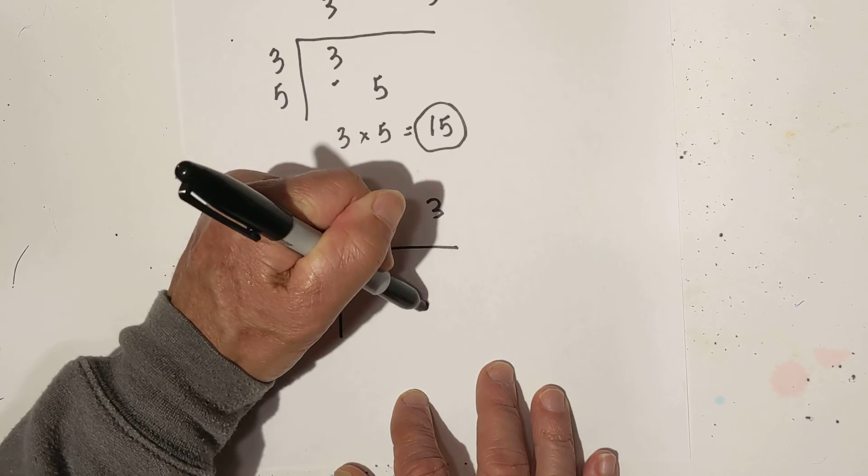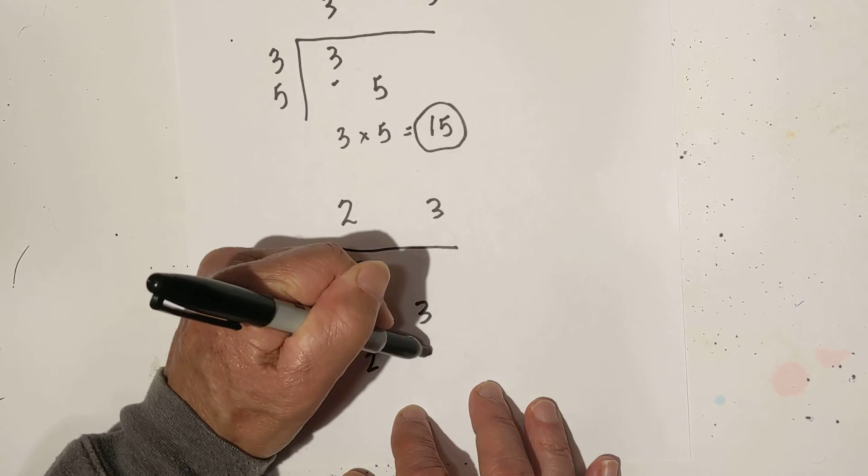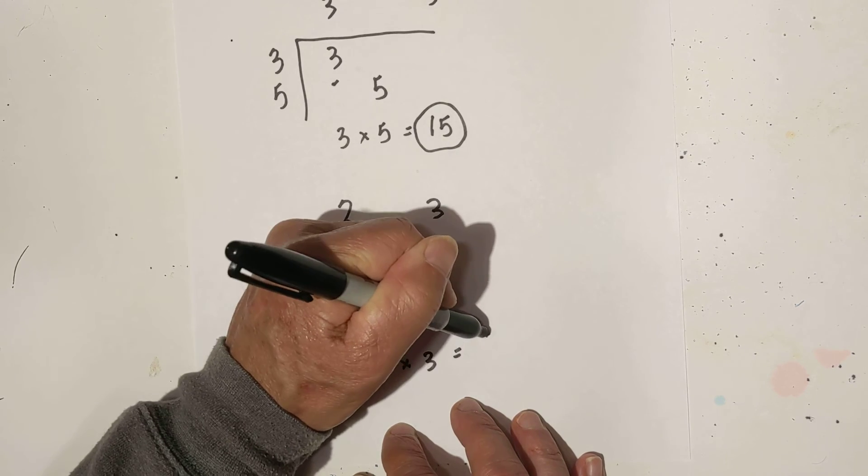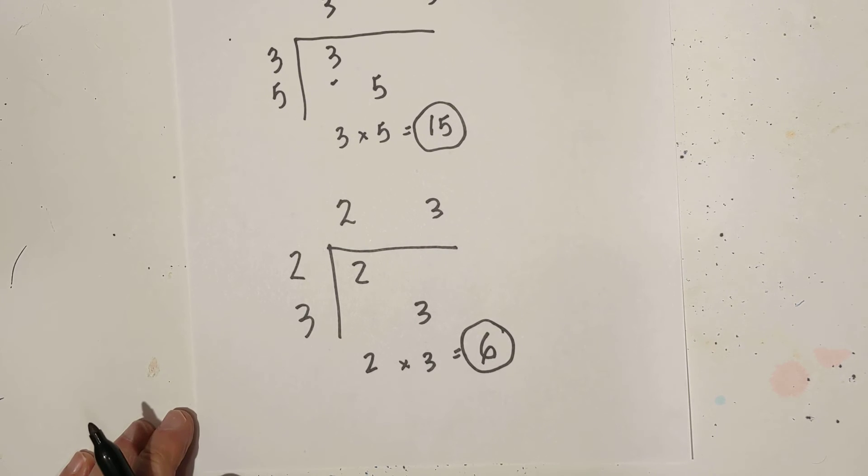Bring down the numbers, I'll bring down the 2, bring down the 3, and multiply these together. The LCM of 2 and 3 is 6.